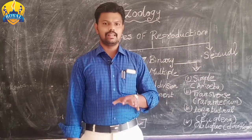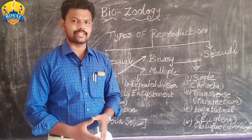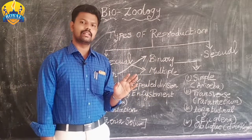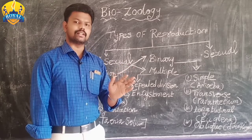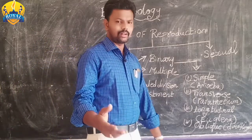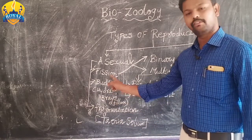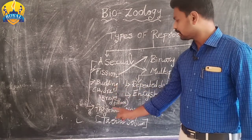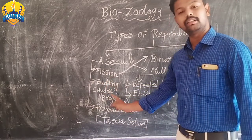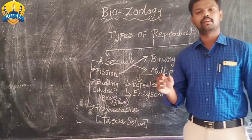What is the asexual method of reproduction? Without the involvement of sexual organs, through the division of body cells, reproduction occurs — that is called the asexual method of reproduction. What are the types of asexual methods? There are three types: fission, budding, and fragmentation.